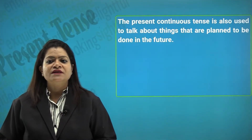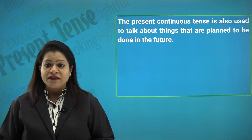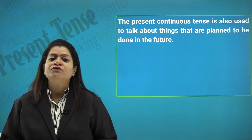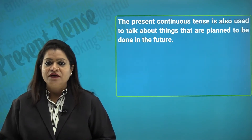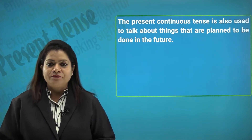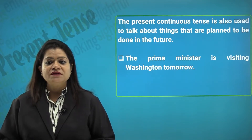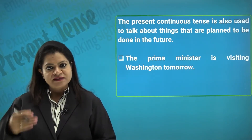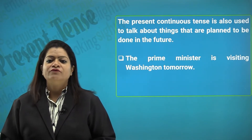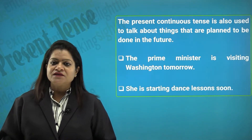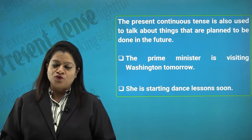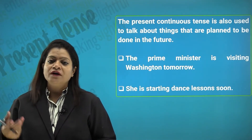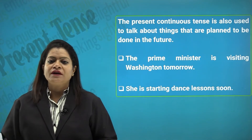The present continuous tense is also used to talk about things that are planned to be done in the future — we use it for future time reference. For example: 'The prime minister is visiting Washington tomorrow' — this is something already decided to be done in the future. 'She is starting dance lessons soon.' So 'is/am/are + verb + ing' can be used for future time reference.